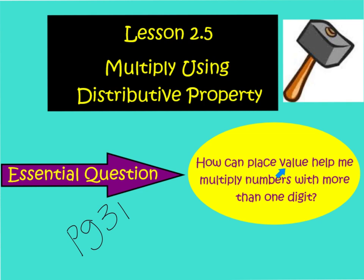How can place value help me multiply numbers with more than one digit? Go ahead and make sure this is written down at the top of page 31, and then we'll get started.